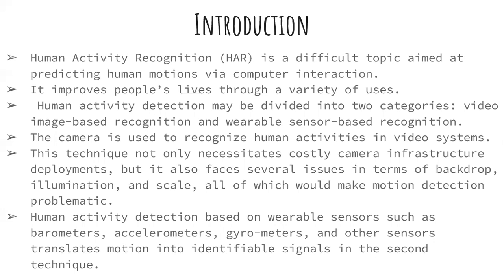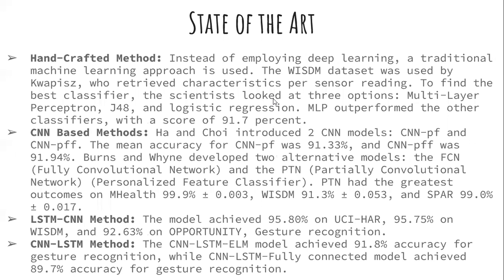The video-based technique not only necessitates costly camera infrastructure, but also faces issues with backdrop, illumination, and scale, making motion detection problematic. The alternative approach — making humans wear wearable sensors such as barometers, accelerometers, and gyrometers — has shown much better results. There are four main state-of-the-art techniques: handcrafted methods, CNN-based methods, LSTM methods, and CNN-LSTM methods.